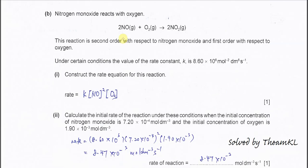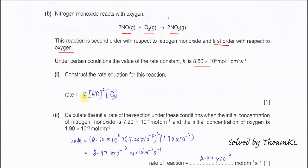Part B: nitrogen monoxide reacts with oxygen to form NO₂. This reaction is second order with respect to NO and first order with respect to oxygen. The rate constant K is 8.6 × 10⁶. Part 1: construct the rate equation. Rate = K[NO]²[O₂]¹. It is second order for NO and first order for O₂.